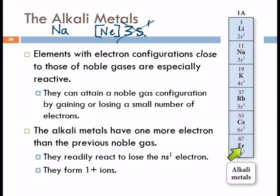The reason that all of these elements form plus one ions is because when they do that, they have the same electron configuration as a noble gas. It's a very stable electron configuration. So they're very reactive because they're very motivated to lose that electron.